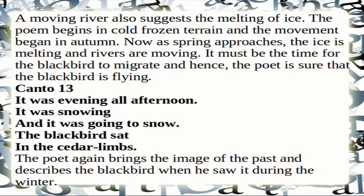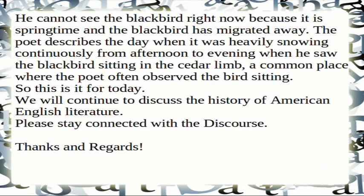Canto 13: 'It was evening all afternoon. It was snowing and it was going to snow. The blackbird sat in the cedar limbs.' The poet returns to the image of the past, describing the blackbird in winter. He cannot see it now because it is springtime and the blackbird has migrated. He describes the day when it was heavily snowing from afternoon to evening, when he saw the blackbird sitting in the cedar limb — a common place where he often observed birds sitting.